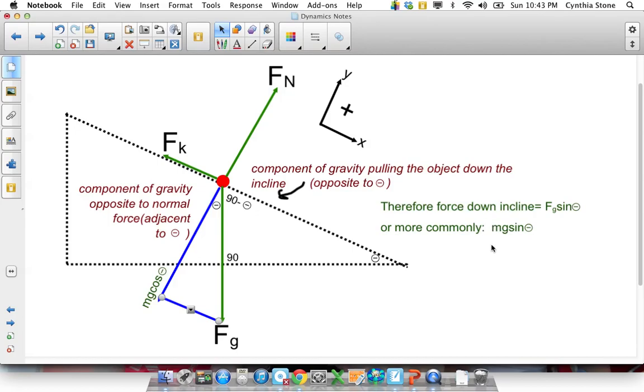And that works because as theta gets closer to 90 degrees, sine theta gets closer to one. So if it was at 90 degrees, then the force pulling it down would be MG. And the less steep of a hill, the less of a factor of gravity. Sine of small numbers, say 10 degrees, is very small, but sine of 70 degrees is very big. So it makes sense that it would be MG sine theta.